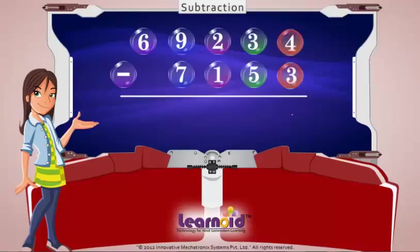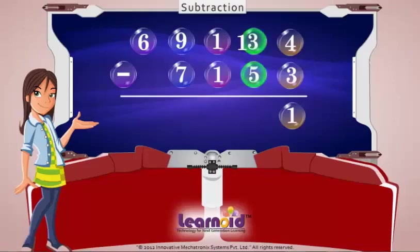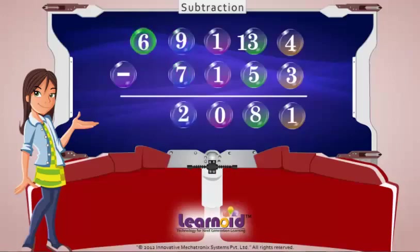4-3 is 1. 3 is less than 5, so we have to borrow 1 from 2. Now 13-5 is 8. 1-1 is 0. 9-7 is 2. 6-0 is 6. The answer is 62,081.